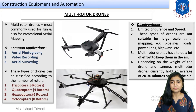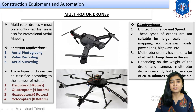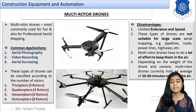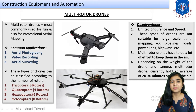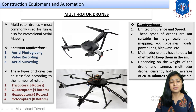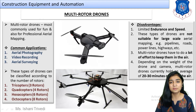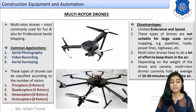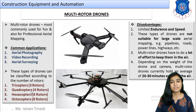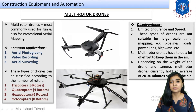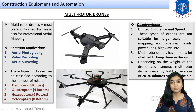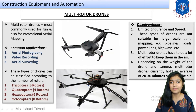Here is an example of octocopters — 8 pairs of rotor blades. These will give you more efficiency, endurance and speed as compared to tricopters or 2-rotor blade drones.